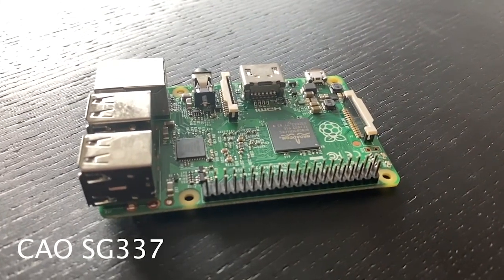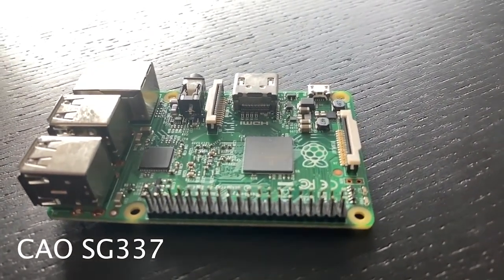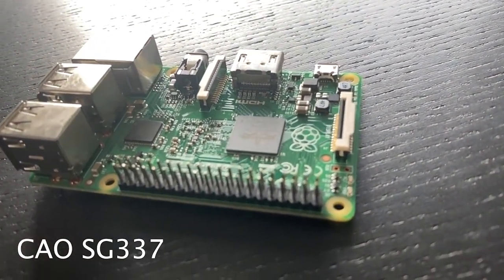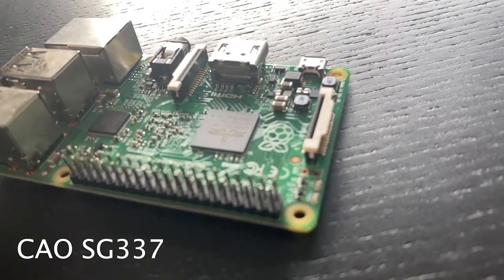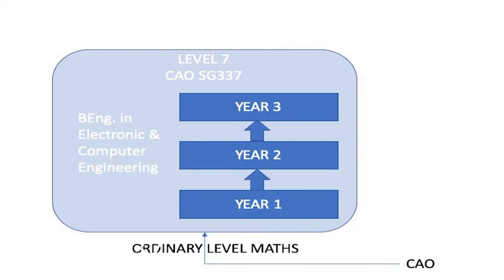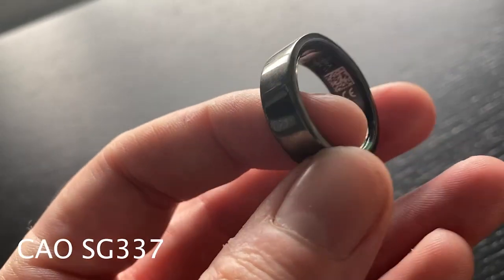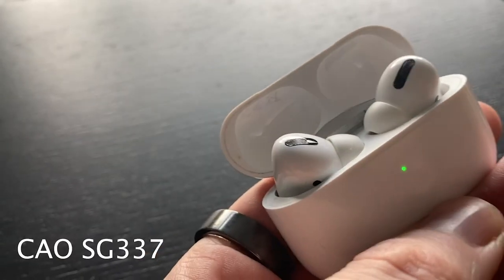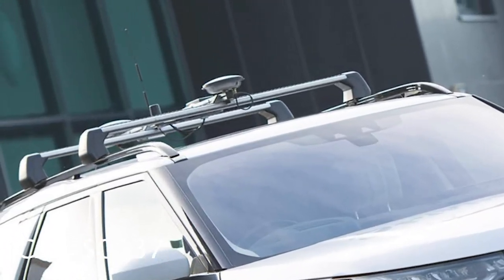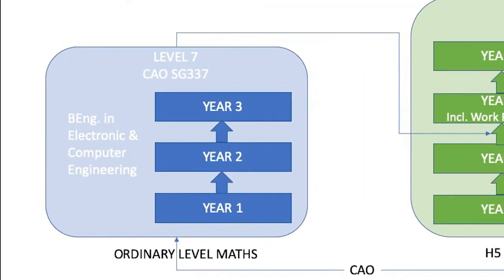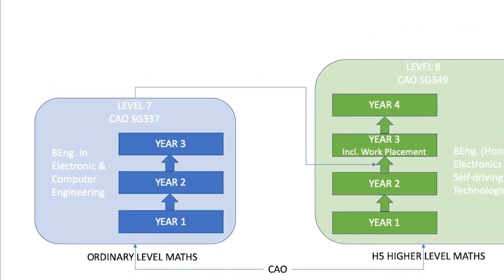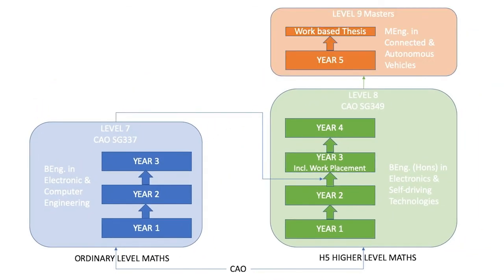If you are interested in technology or engineering but are not doing higher level maths, why not consider our level 7 in electronic and computer engineering? This is a three-year program that looks at the design and development of embedded electronic systems—these are the medical devices that keeps us healthy, the consumer devices that keeps us entertained, or the controlled systems that keeps us safe on the road. You can then progress onto the level 8 in electronics and self-driving technologies, and from there to the masters. Check out the link below for more information.